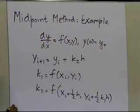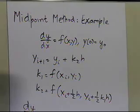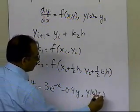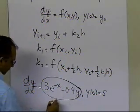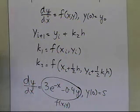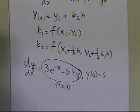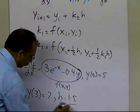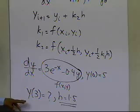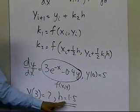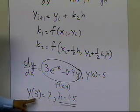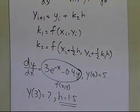Let's take an example. Suppose somebody gives us the differential equation dy/dx equal to 3e to the power of minus x, minus 0.4y, and y-sub-0 equals 5. This becomes your function f(x, y) which you need for solving the differential equation. We're asked to calculate y-sub-3, given that the step size is 1.5. Starting from 0, we go from 0 to 1.5 in one step, and from 1.5 to 3 in another step — two steps total with step size 1.5.